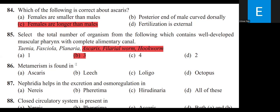Metamerism is found in which of the following: Ascaris, Leech, or Loligo? Ascaris belongs to Aschelminthes; Leech (Hirudinaria) belongs to Phylum Annelida; Loligo (Squid) and Octopus belong to Phylum Mollusca. Metamerism is found in Leech (Hirudinaria).